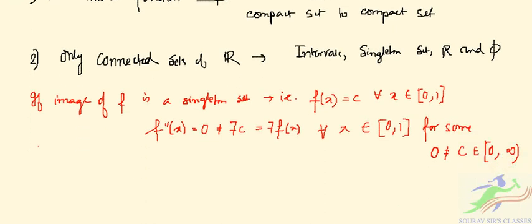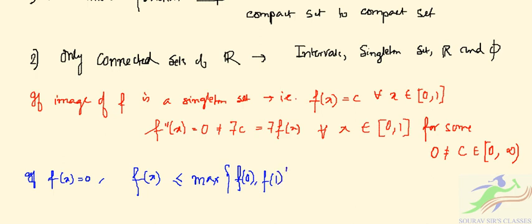Now if f(x) = 0, then f(x) is less than or equal to the maximum value of f(0) and f(1) as given in the problem.